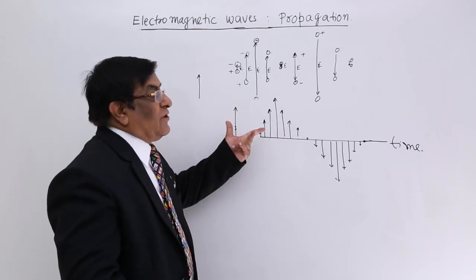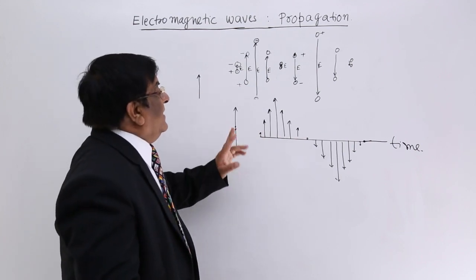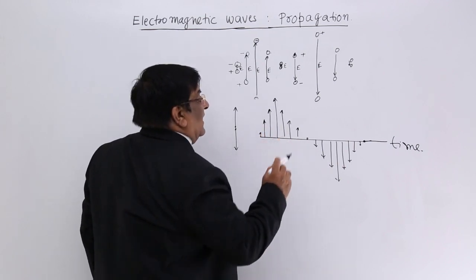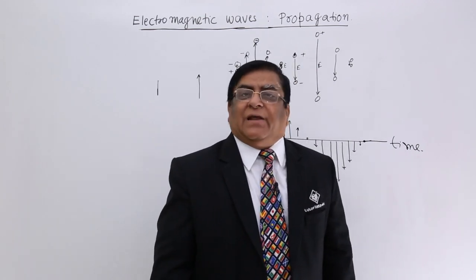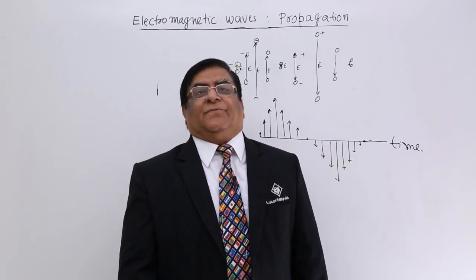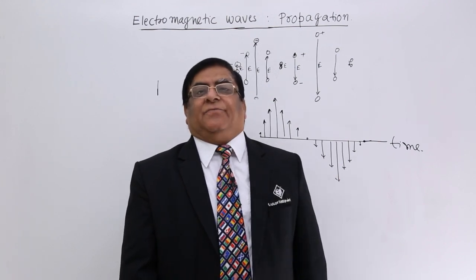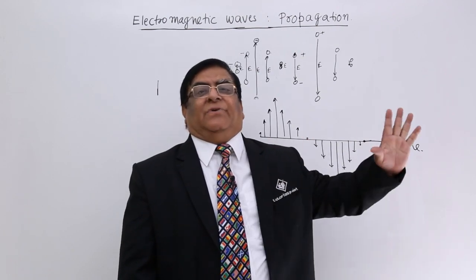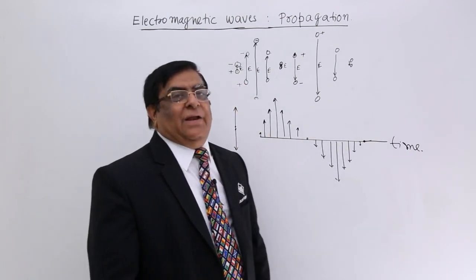In the next oscillation, again electric fields are created. These electric fields are varying electric fields. A varying electric field is capable of creating a magnetic field. Because it is a varying electric field, it would create a magnetic field which is itself a varying magnetic field.